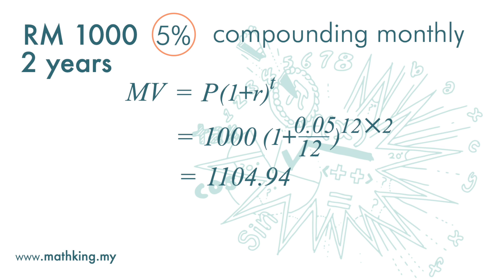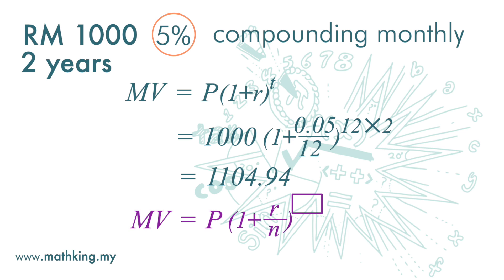The final formula is: matured value equals principal times one plus yearly interest rate divided by the number of times the interest is compounded per year, to the power of the total number of times the interest is compounded — that is, the number of times compounded per year, times the number of years.